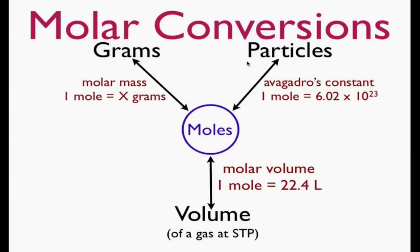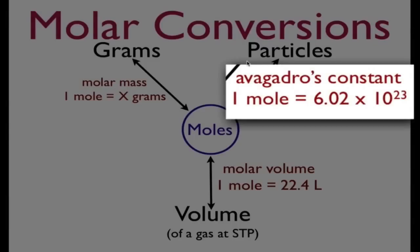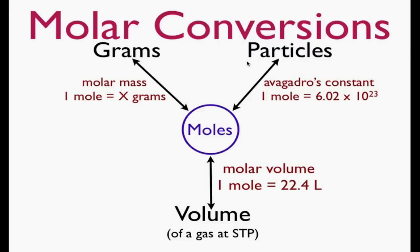And then we can convert very easily between particles and moles through Avogadro's constant because we know that one mole of the substance is equal to 6.02 times 10 to the 23rd particles, which we mean like molecules or atoms or ions or something like that.